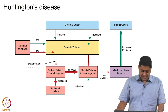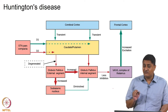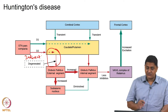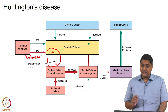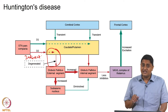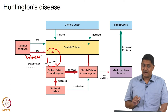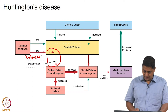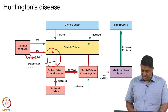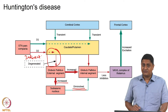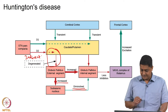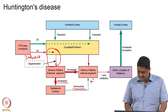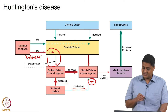What exactly is happening in this disease? What pathway is affected? It turns out that Huntington's disease involves selective degeneration of the indirect pathway. That means the neurons from the striatum to the GPe are affected. This leads to a situation where the subthalamic nucleus is inhibited to a greater extent, thus diminishing the subthalamic nucleus input to the GPI.